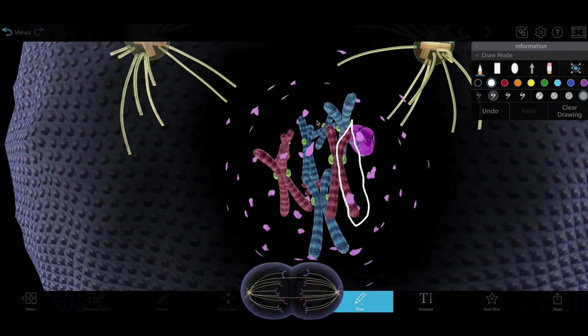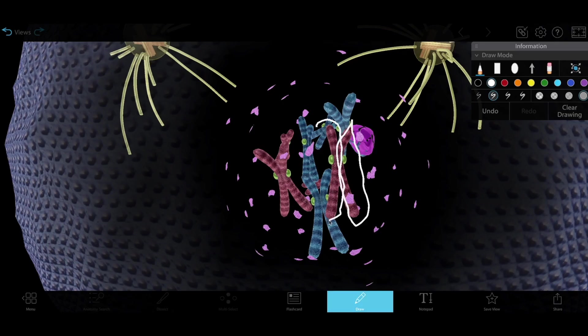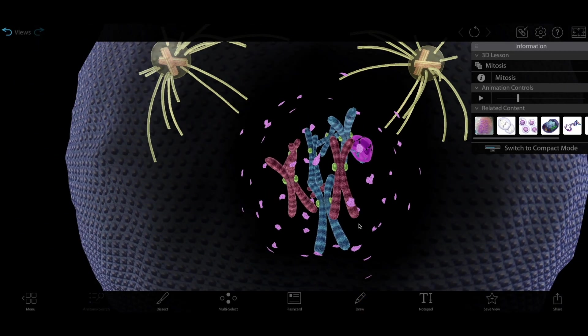Watch the mitosis simulation and you'll observe that the result of mitosis is two genetically identical daughter cells. The parent cell replicates its genetic material.